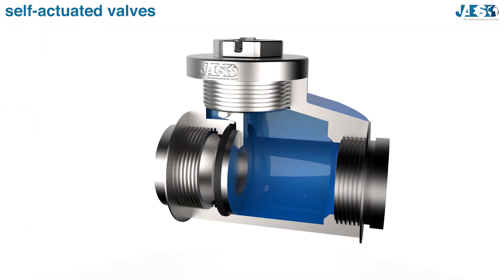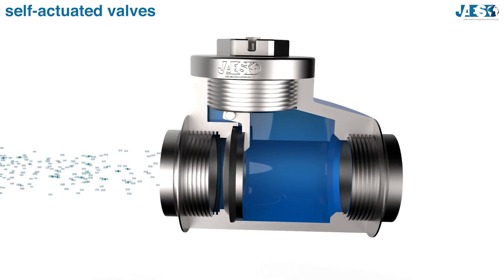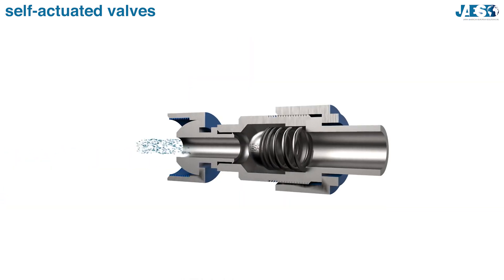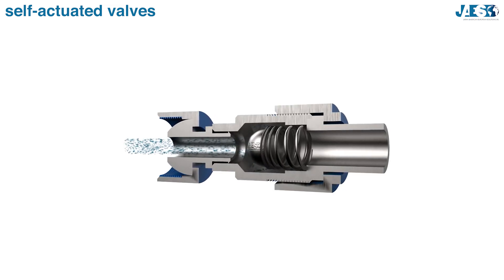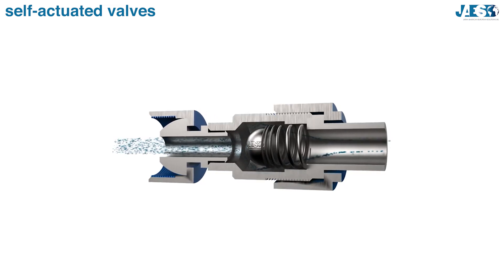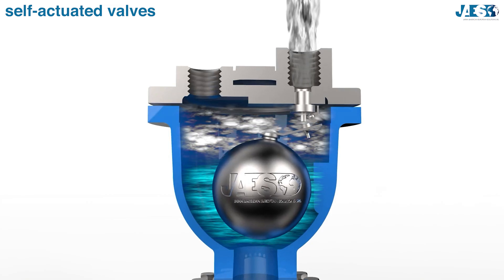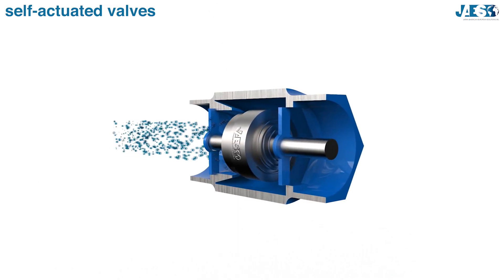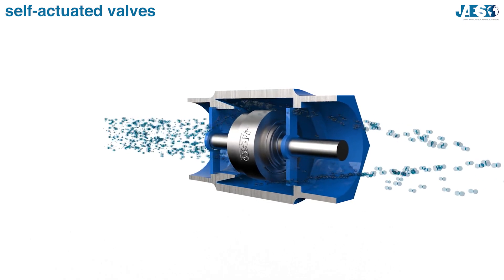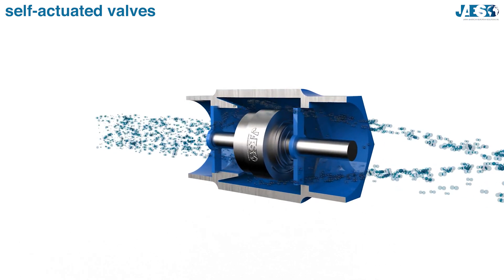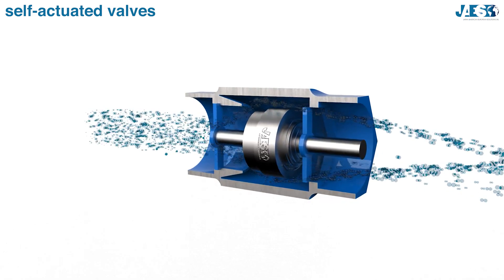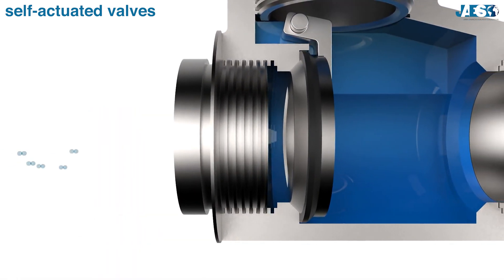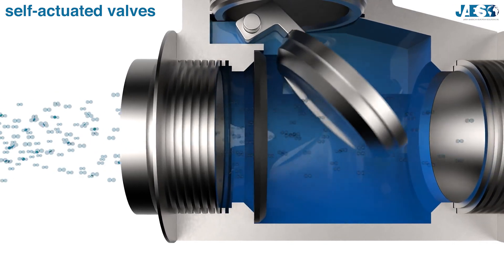In some applications, it is the process fluid itself that provides the force necessary to operate the valve. These valves are called self-actuated — for example, check, relief, and safety valves. They are usually equipped with a spring which, connected to the disc, performs a closing force opposite to the pressure of the fluid. When the force of the fluid exceeds that of the spring, the shutter opens and the valve is actuated.